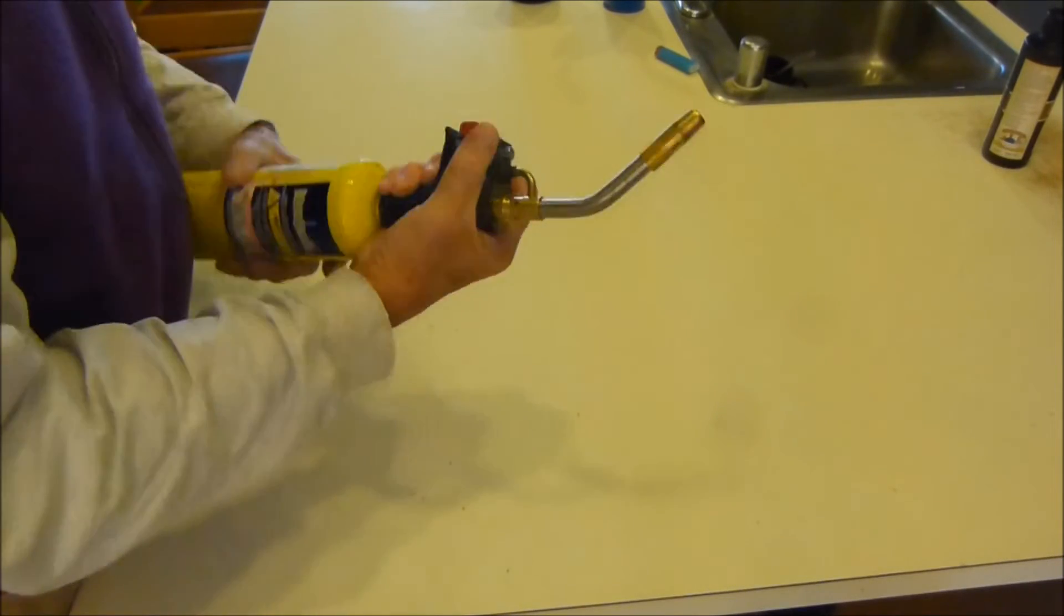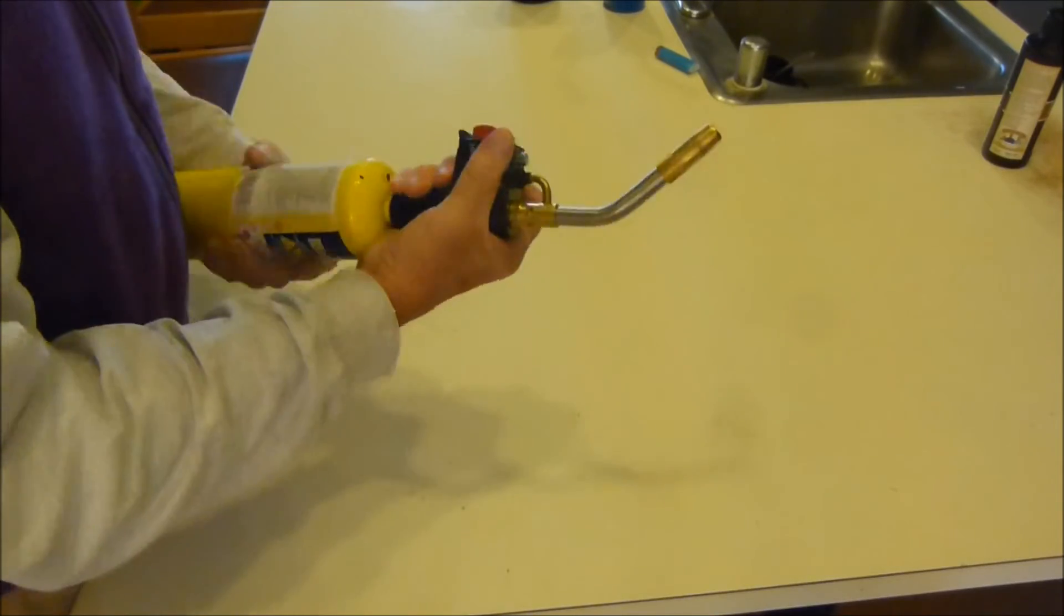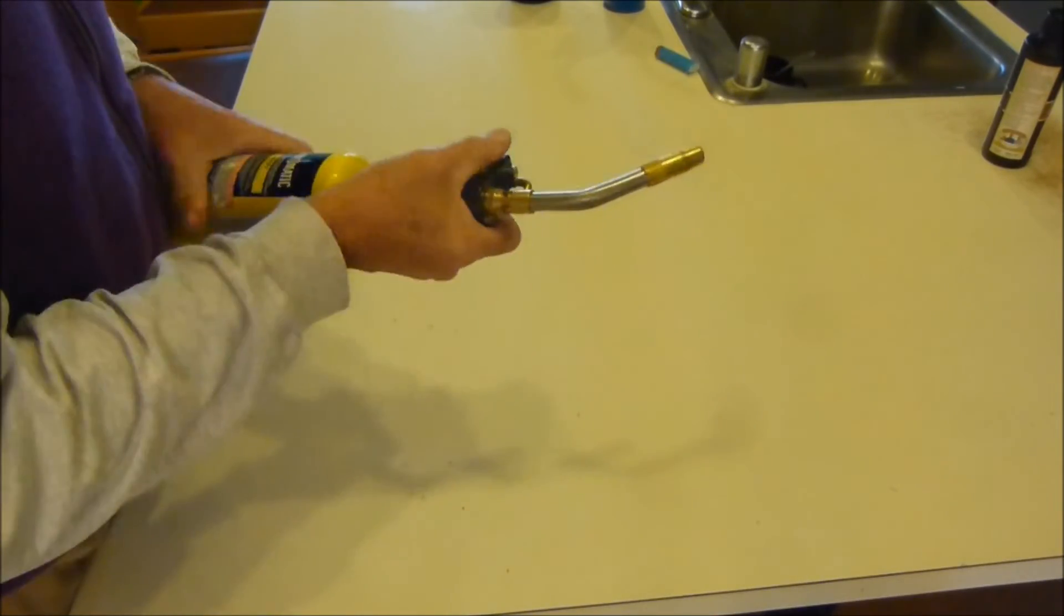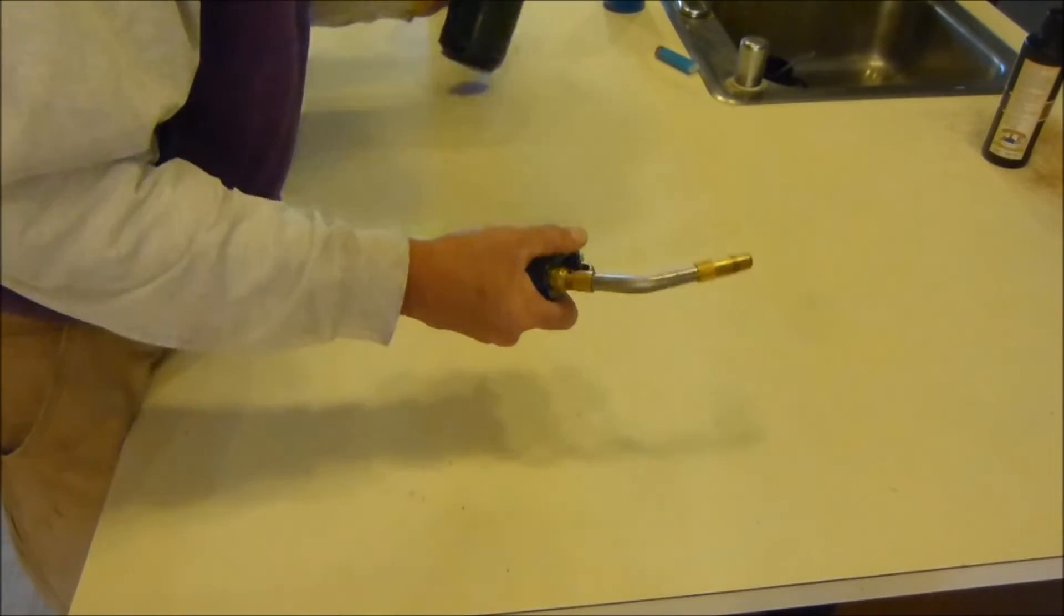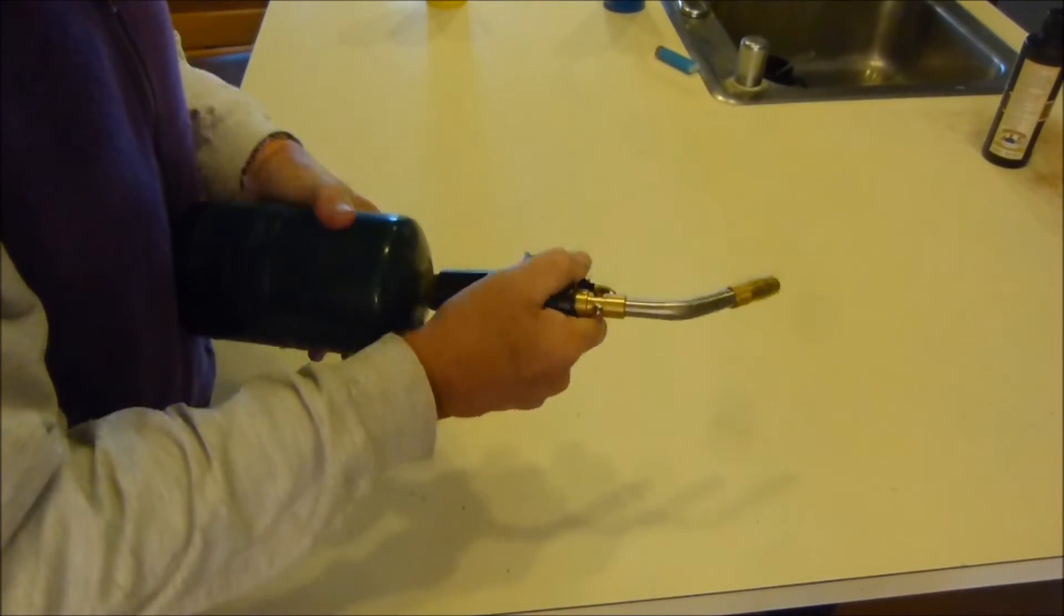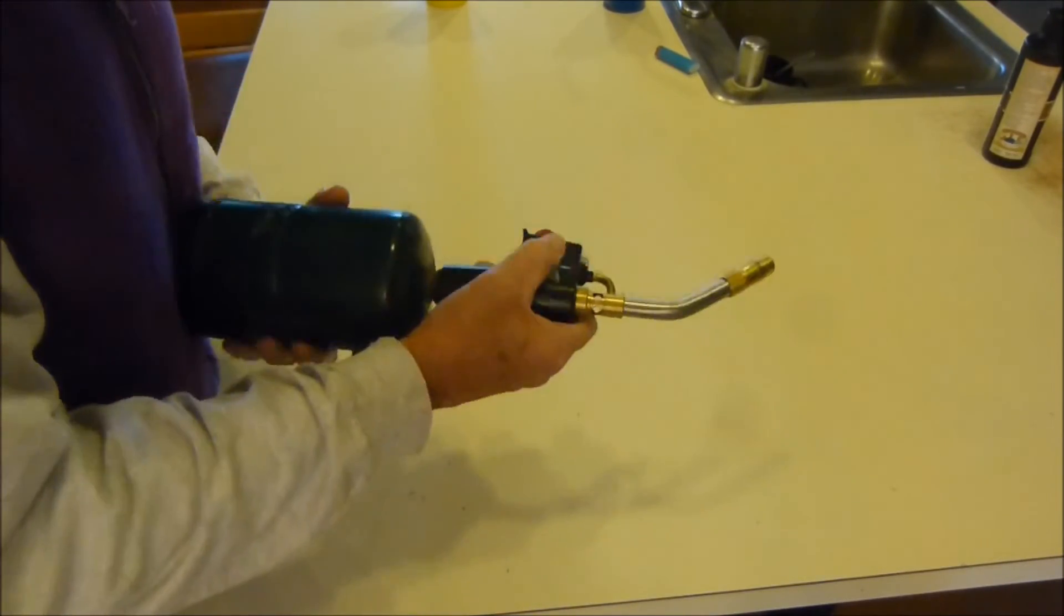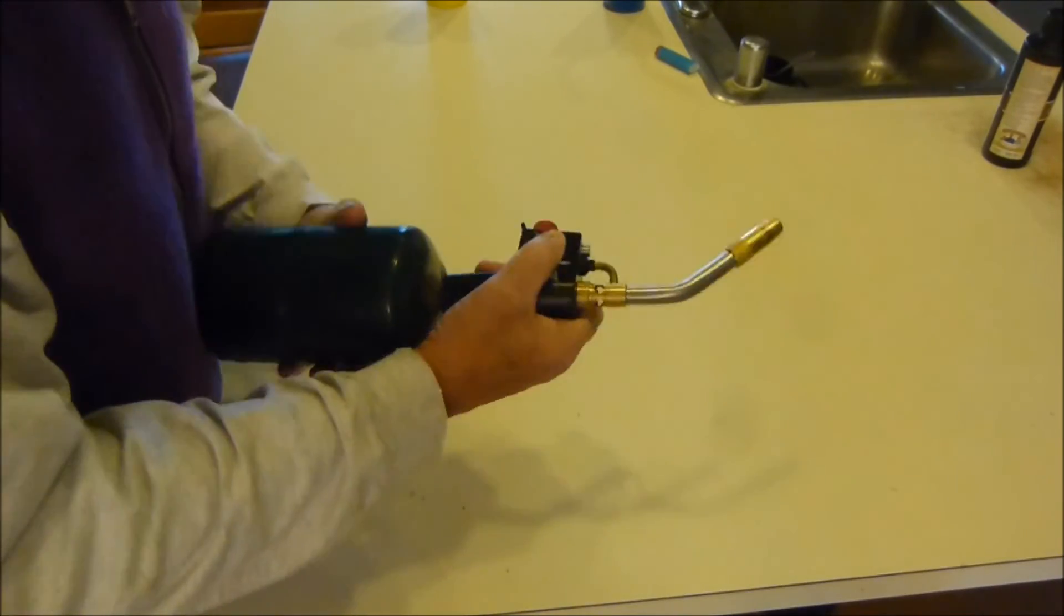I'm going to unscrew this. Now, you can use the torch for MAP gas with propane, but you can't use a propane torch with MAP gas.